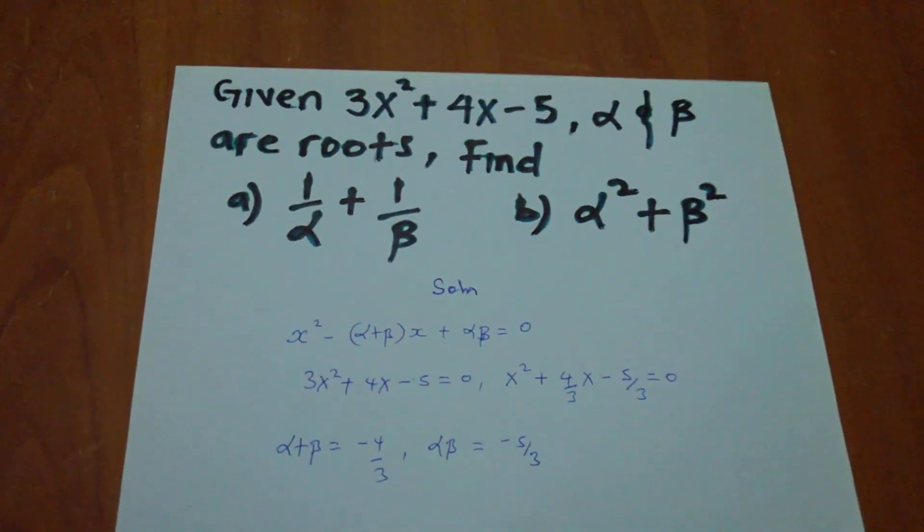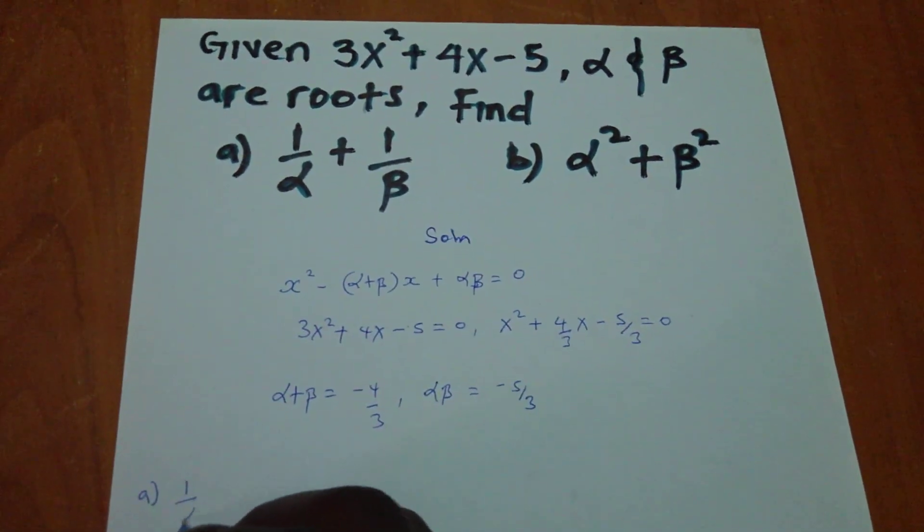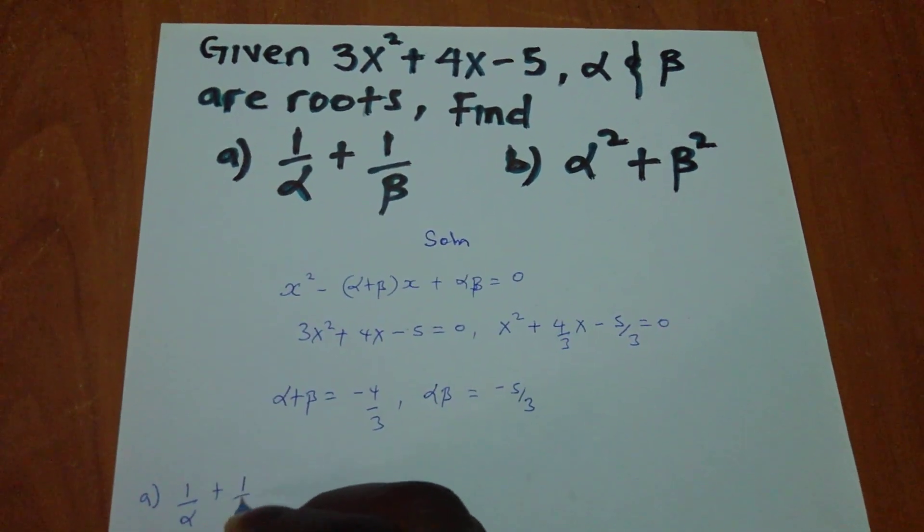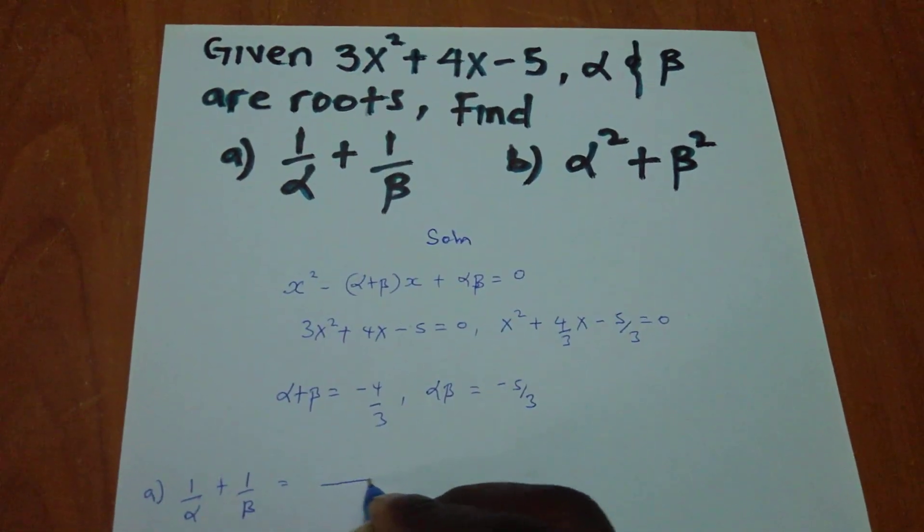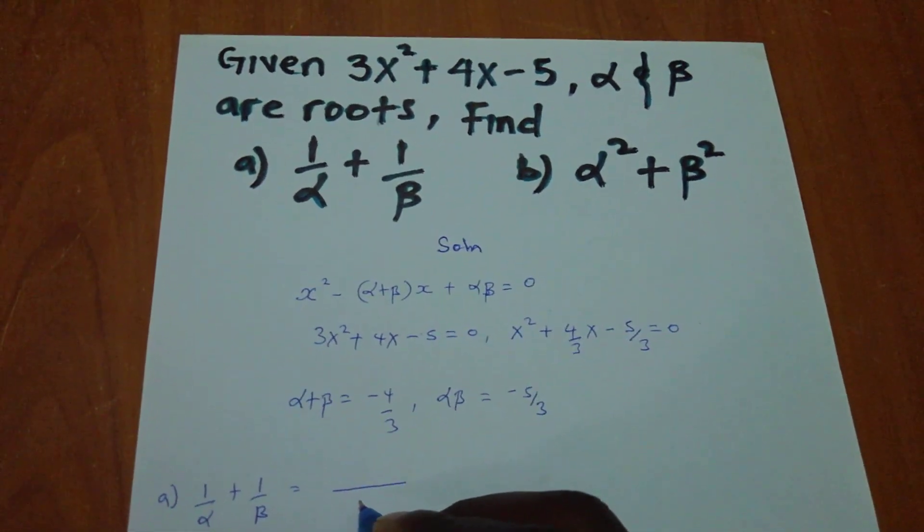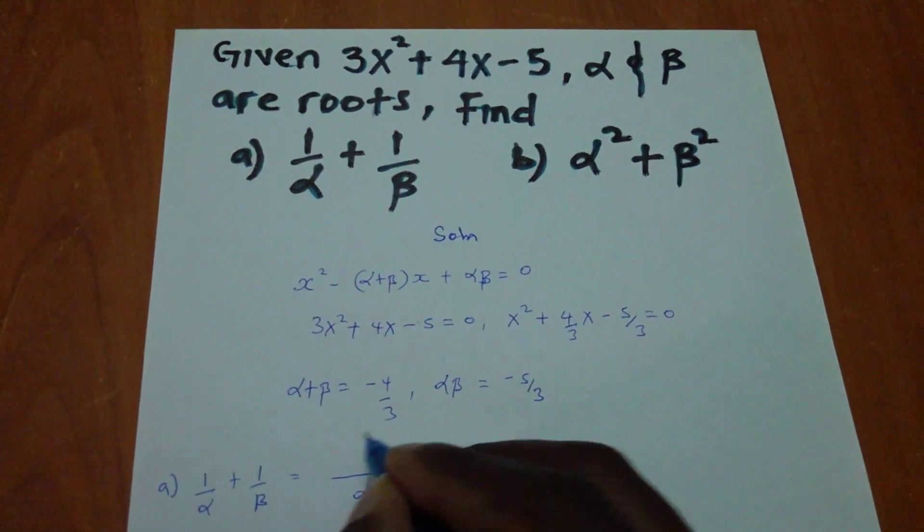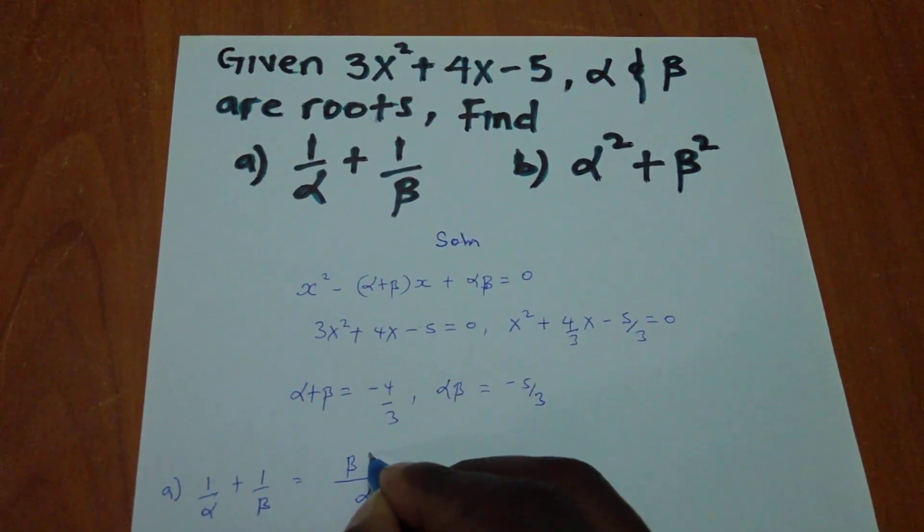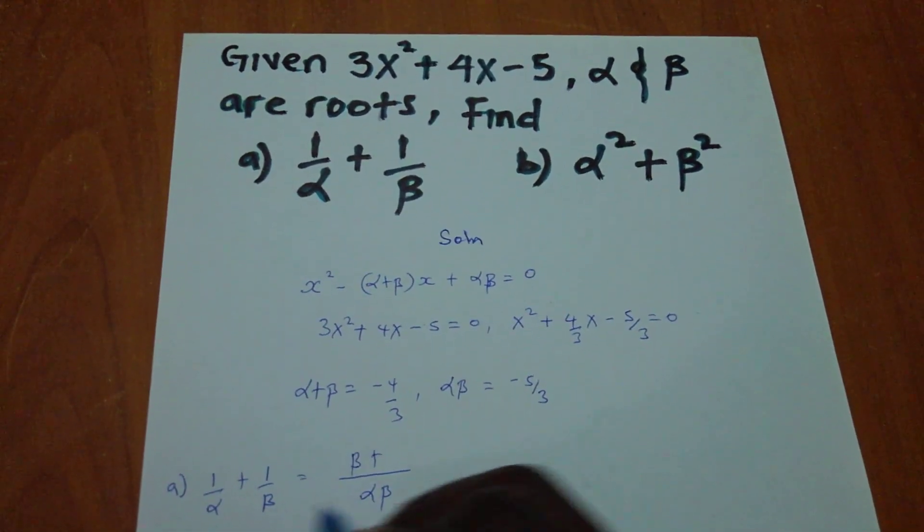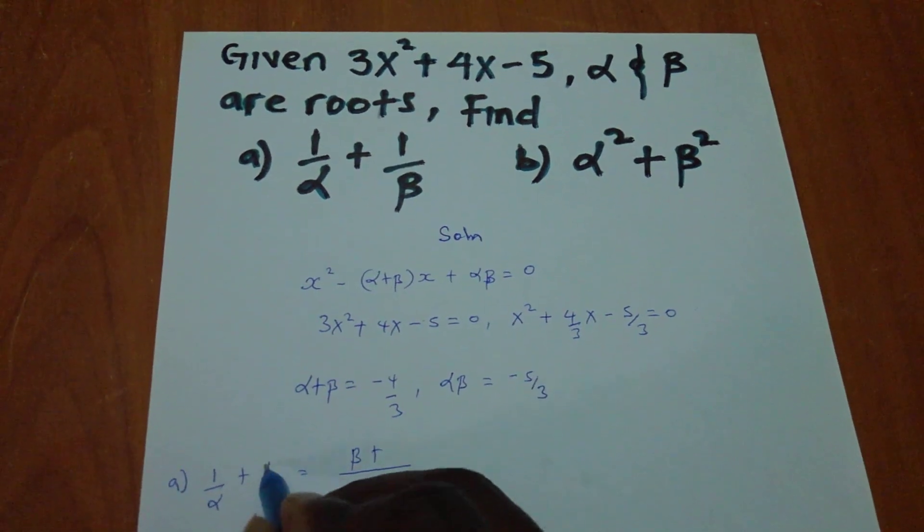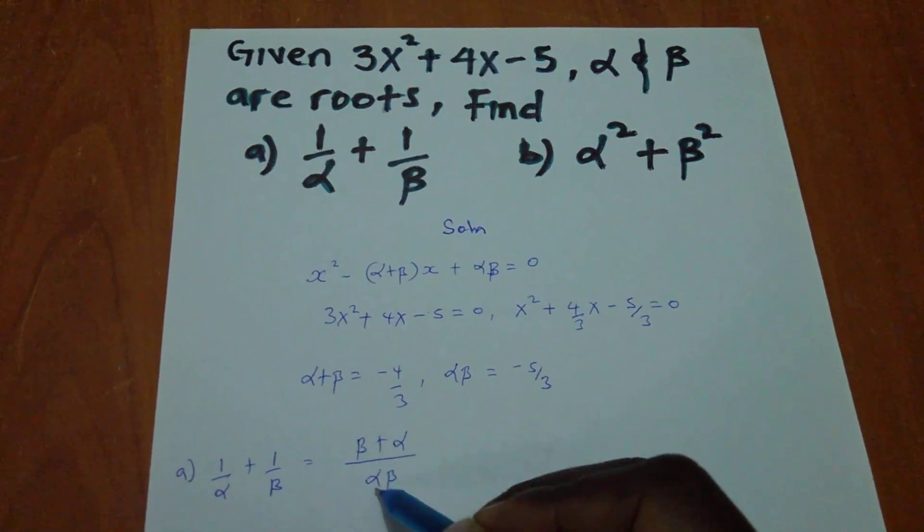And now I'm going to start part A. I have 1/α + 1/β. This one is the same as, remember, the LCM. For this, it's αβ. And in here, if I divide by α, I'll remain with β. β times 1, you'll get β. αβ divided by β, you'll get α times 1. You'll have that, which is in form of sum and product.